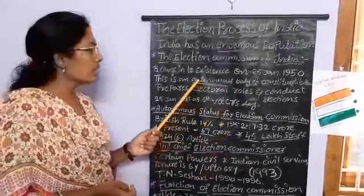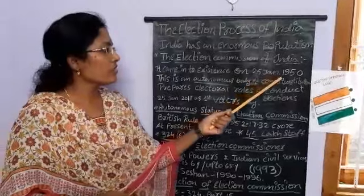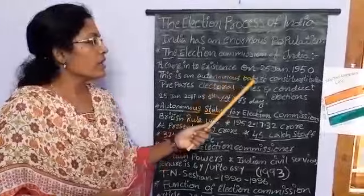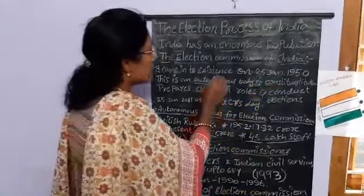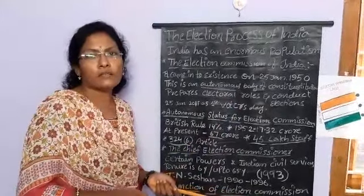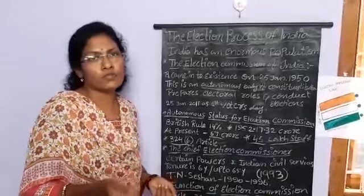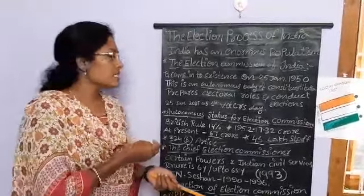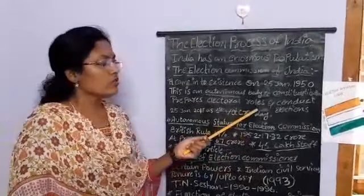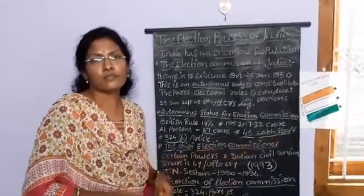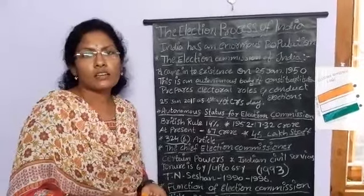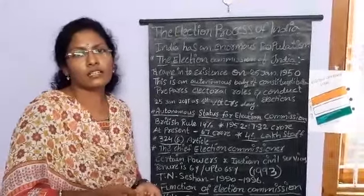The Election Commission of India came into existence on 25th January 1950. This is an autonomous body of the constitution. Autonomous means it is independent, not controlled by others or outside forces. With its authority, the Election Commission prepares electoral rules and conducts elections — Lok Sabha, Raj Sabha, state legislative bodies, president and vice president elections also.